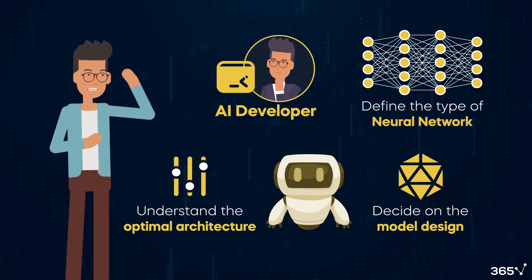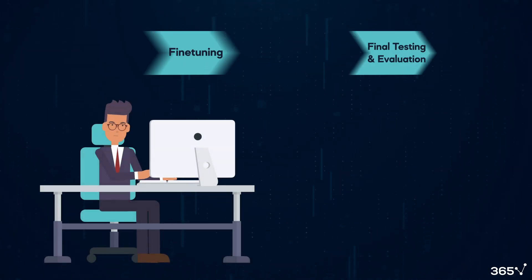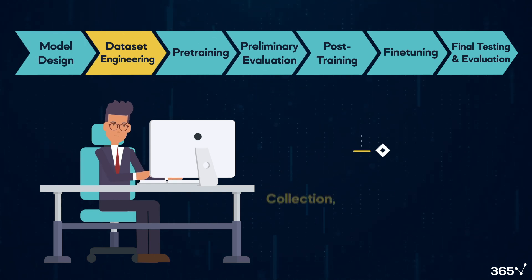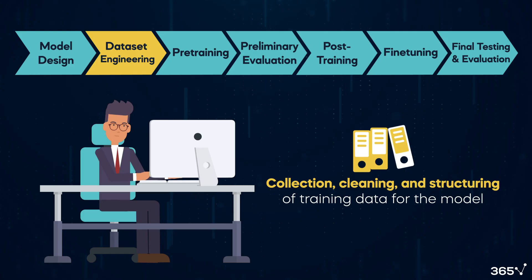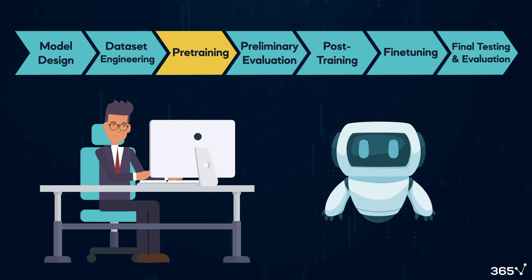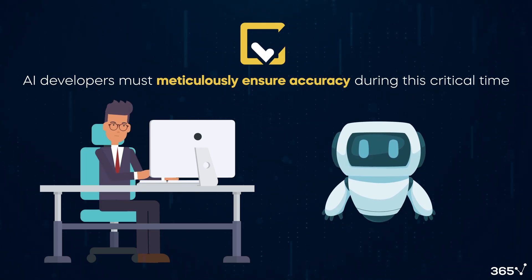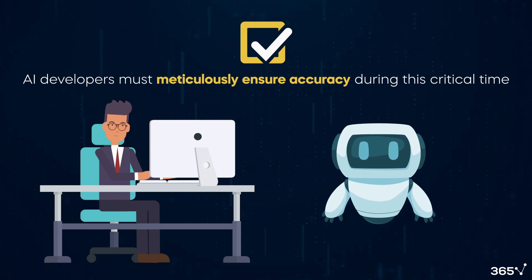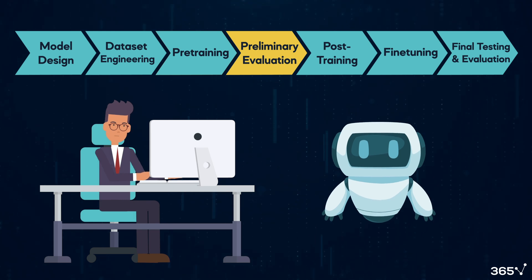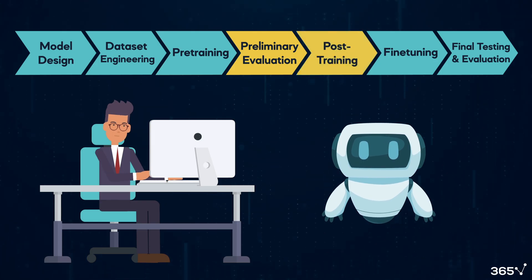They'll define the type of neural network and how many layers of depth the model will have. Once AI developers make these decisions, the dataset engineering stage begins — collecting, cleaning, and structuring the model's training data. These essential preparations for the pre-training phase involve training the model on a vast raw data corpus. AI developers must meticulously ensure accuracy during this critical time, because training is costly and leaves no room for errors. Once trained, AI developers conduct a preliminary evaluation of the model, refining it with higher quality data and prompt engineering, then continue to refine and evaluate the model until it's ready for production.